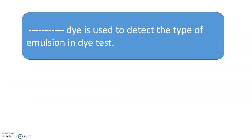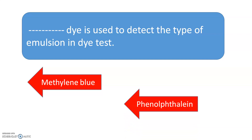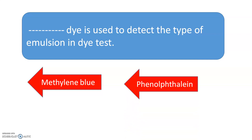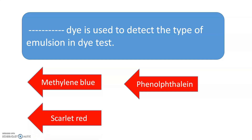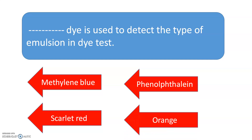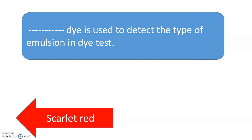Which dye is used to detect the type of emulsion in the dye test? The options are: methylene blue, phenolphthalein, scarlet red, or orange. The correct answer is scarlet red. In the dye test, the dye used is scarlet red.